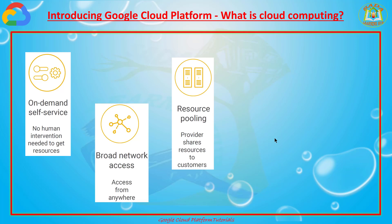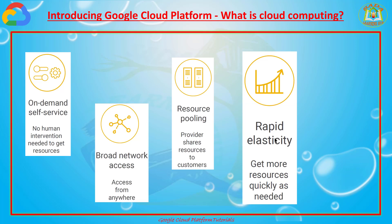The fourth one is rapid elasticity, which means you can get more resources quickly as needed. If you need more resources, you can scale up rapidly. If you need less, you can scale back. Whenever you need resources, you can get them; whenever you don't, you can scale down.